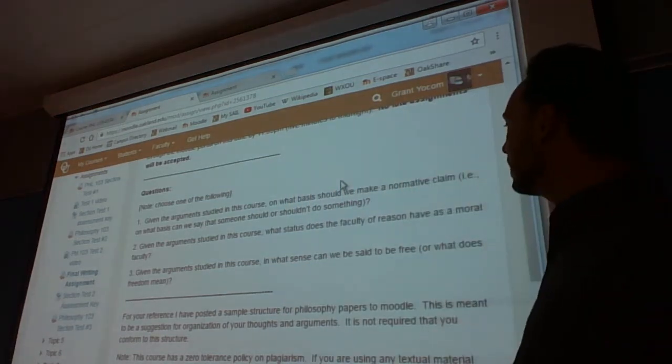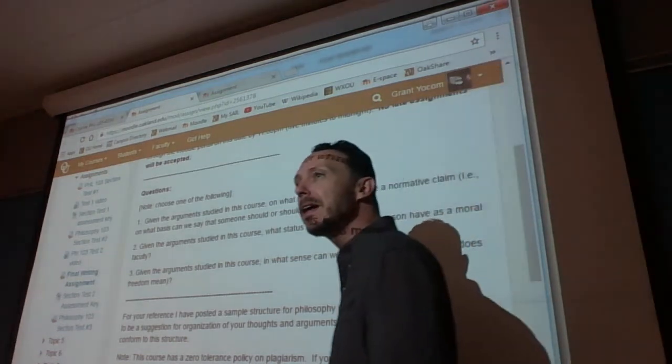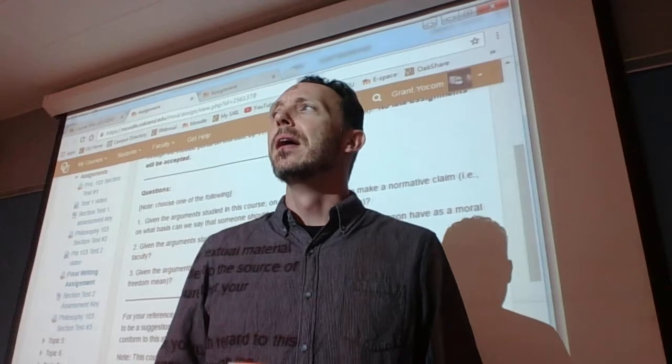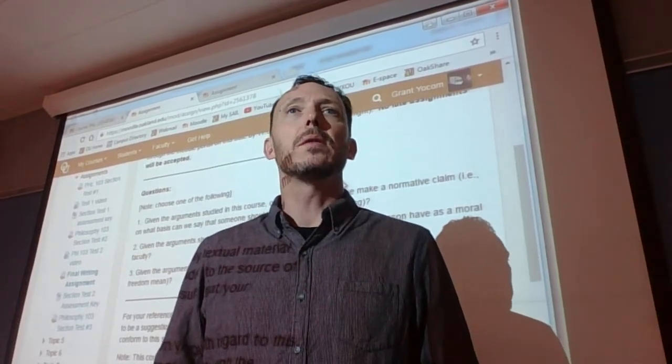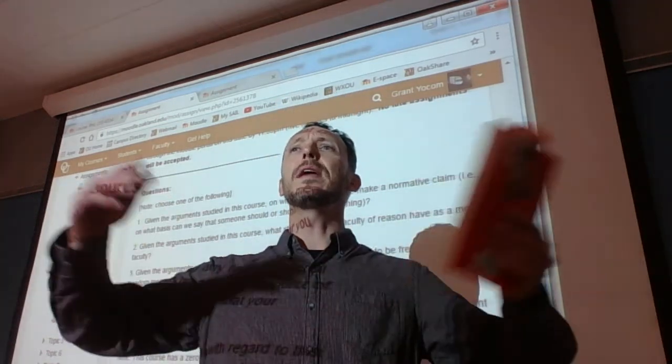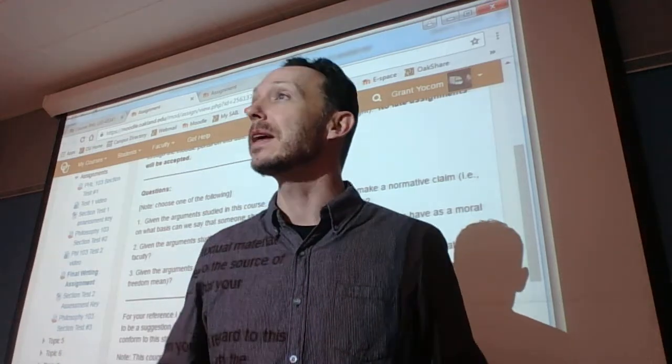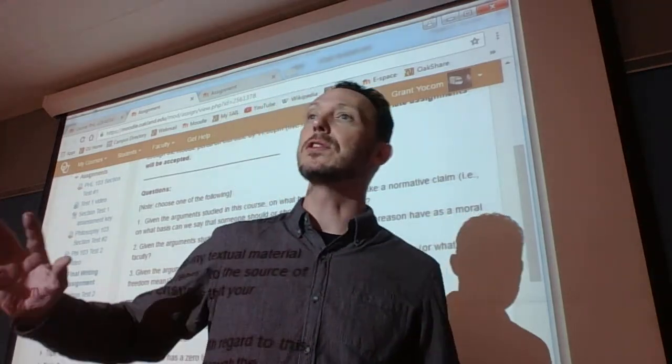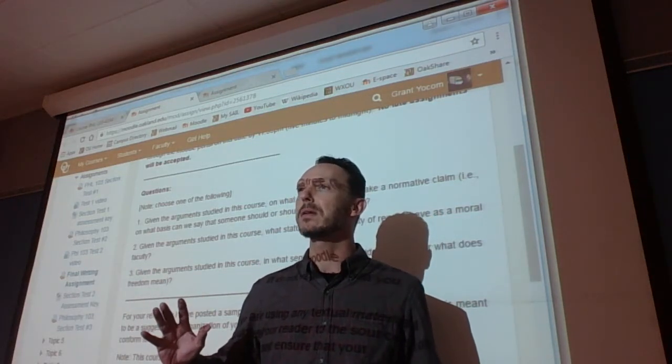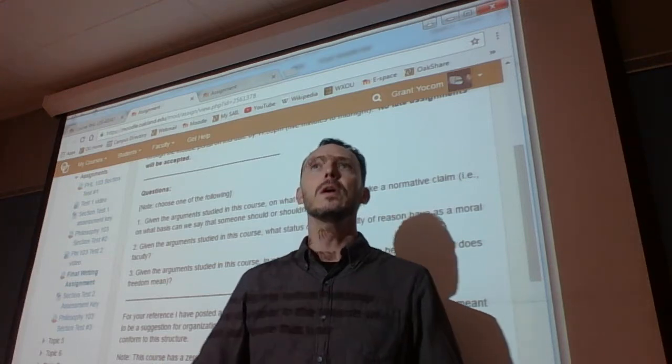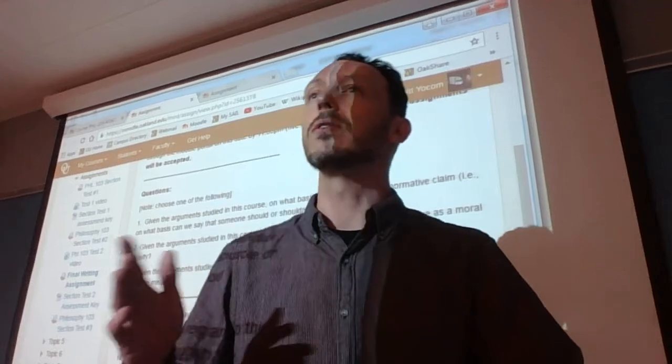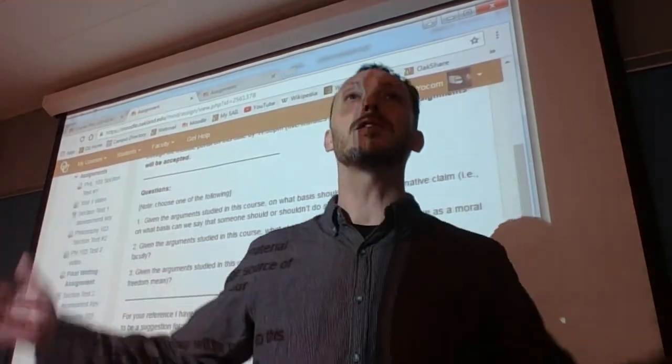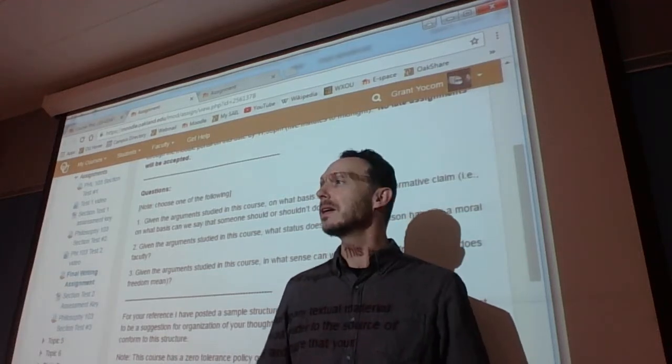And then finally, given the argument studied in this course, in what sense can we be said to be free? What does freedom mean? Now for the ancients, this is a funny one. Effectively for both Socrates and Aristotle, we find that freedom involves reveling in the expression of our human capacities. For both of them, that's rationality. You get a stricter case that opposes reason to desire or emotion or opinion in Socrates versus Aristotle, who to a certain extent wants to embrace our emotional landscape. But nonetheless, we're freest when we are most fully human. That is, expressing that which is most fully human in us. That is, being bloody rational.